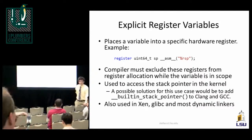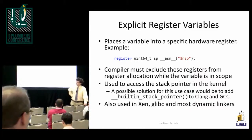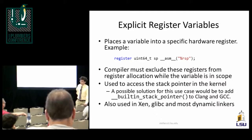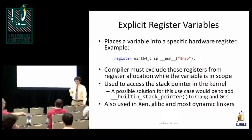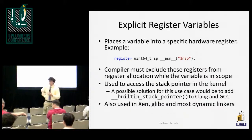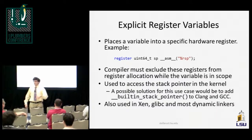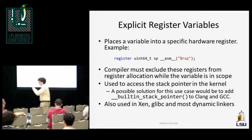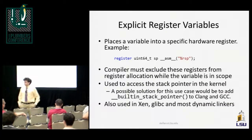Some architectures use the global register variable feature for a per-CPU pointer — Alpha does that. More importantly, Xen uses this, as do the C library and most dynamic linkers — not for the stack pointer, but for various virtualization purposes. I think fixing this generally for explicit global register variables is a longer-term project. But built-in stack pointer support is very viable. The solution — credit to Mark — is that there's already a GCC built-in called __builtin_frame_address, and the code for __builtin_stack_pointer would look basically the same.